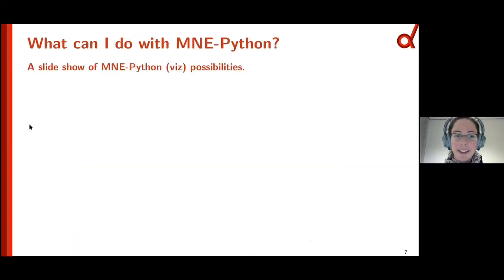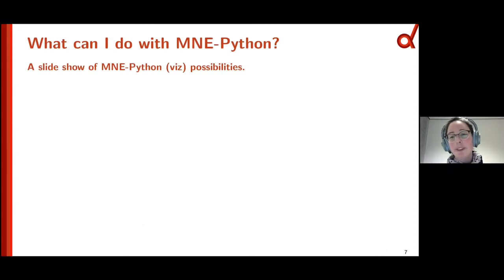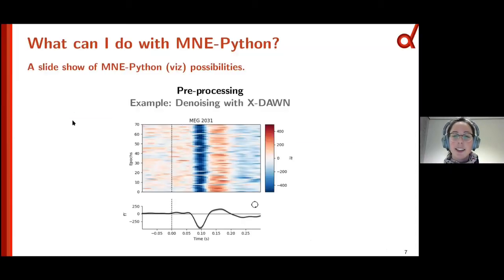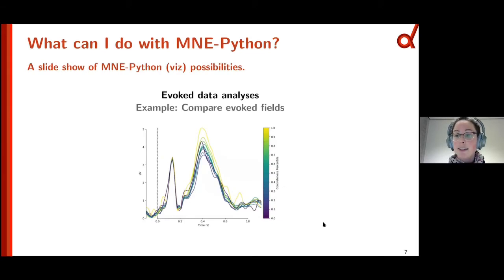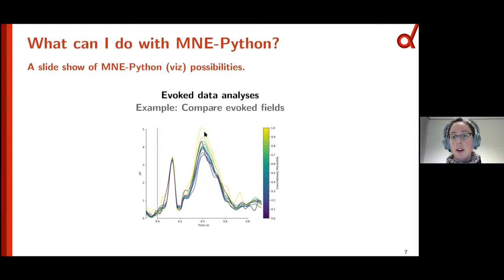What can you do with MNE Python? To give you a glimpse into the many things you can do with our toolbox, here's a short slideshow of possibilities focusing on visualization. You can do pre-processing of your MEG or EEG data — we also support ECoG and fNIRS data. Apart from normal filtering, you can also do more exotic things like denoising with xDAWN. You might then want to do evoked analysis to get evoked fields or event-related potentials, cut those epochs, get to the evoked part, and plot it — for example comparing different conditions.